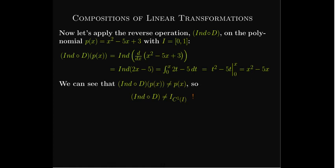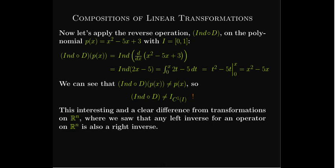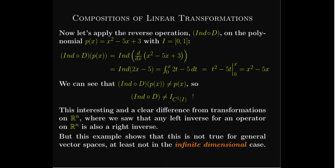We lost information, so this composition is no longer an identity operator. D is a left inverse of the indefinite integral, meaning the derivative undoes the indefinite integral, but the indefinite integral does not undo the derivative. So D is not a right inverse for the indefinite integral. This is very different from what happens in Euclidean space, where having a left inverse guarantees a right inverse. Here, in the infinite-dimensional case, that is not always true.